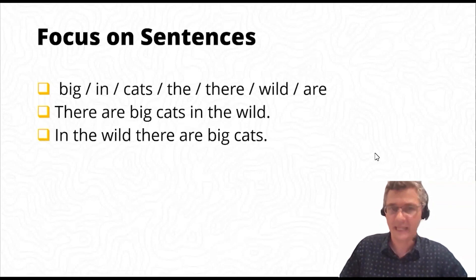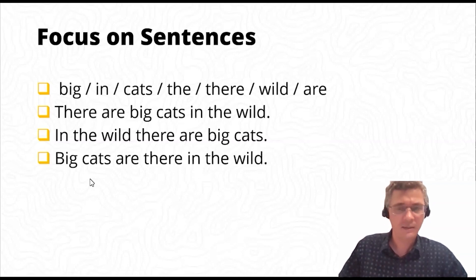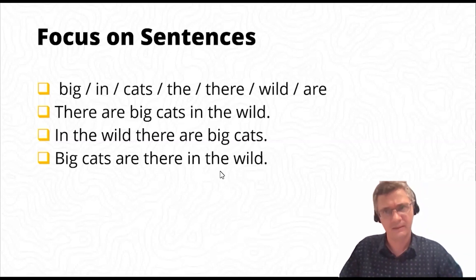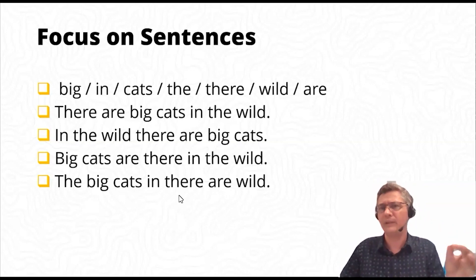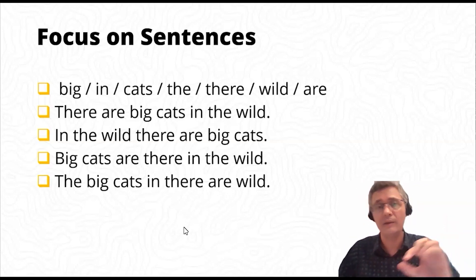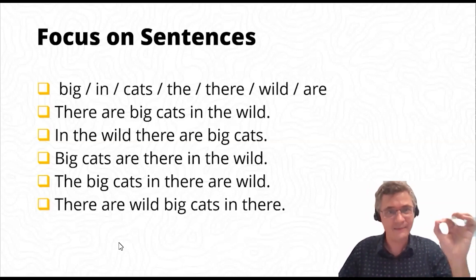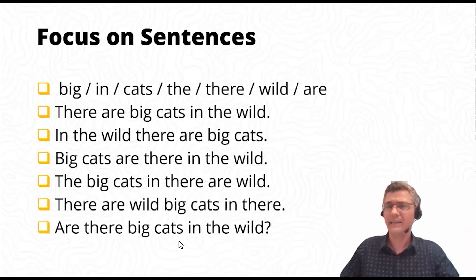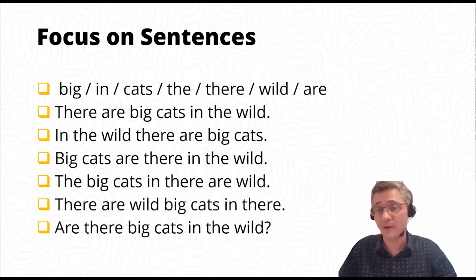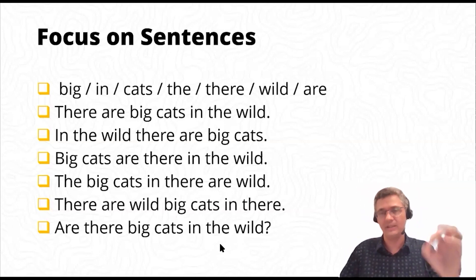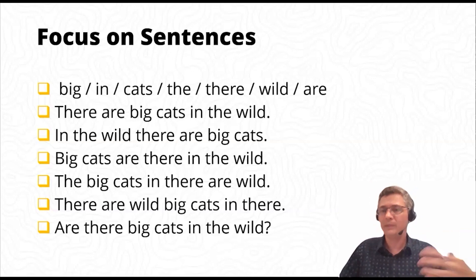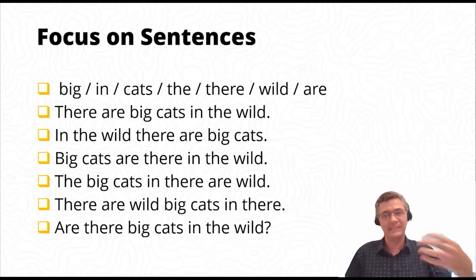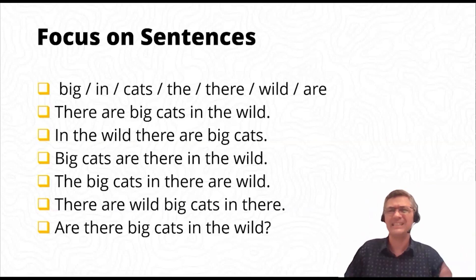Another group might have 'big cats are there in the wild,' or 'the big cats in there are wild,' or 'are there big cats in the wild?' From these seven words, I've got six different possibilities. This might be good for making the point about the flexibility of English or sentence structure, but it's much too open-ended and probably doesn't help our students much. This might be useful for an advanced grammar lesson, but not for young learners. So to make it easier: give some punctuation. It massively reduces the options and also teaches them about punctuation.